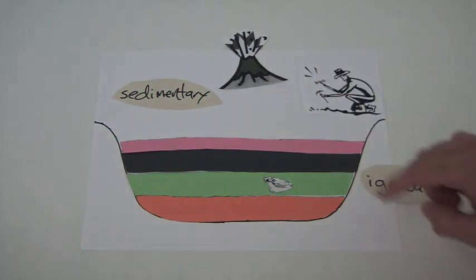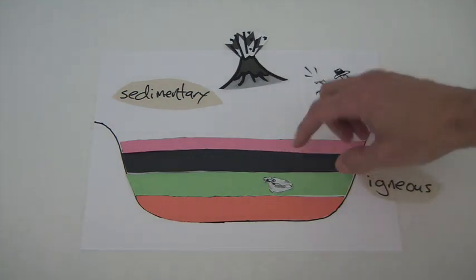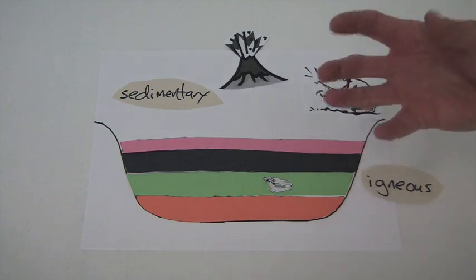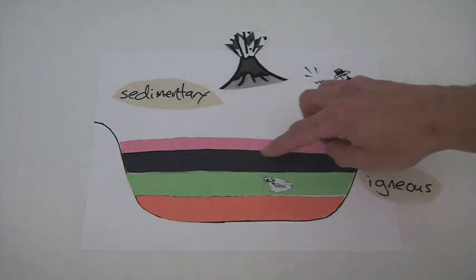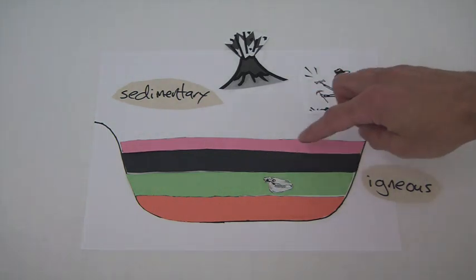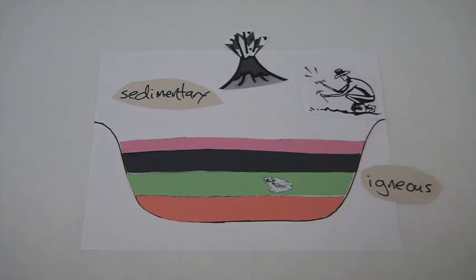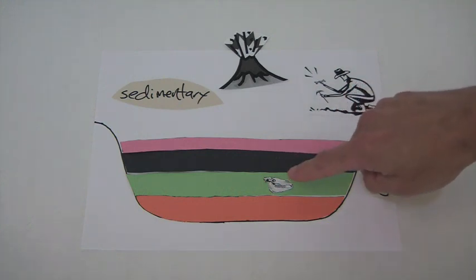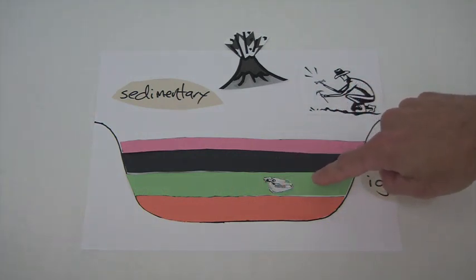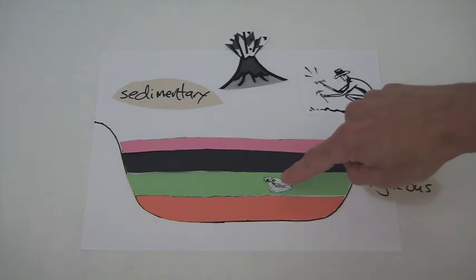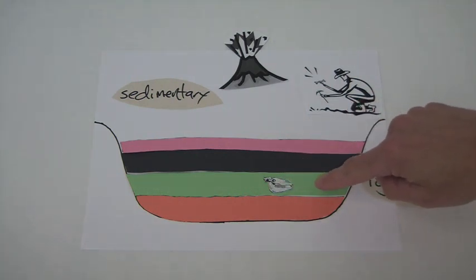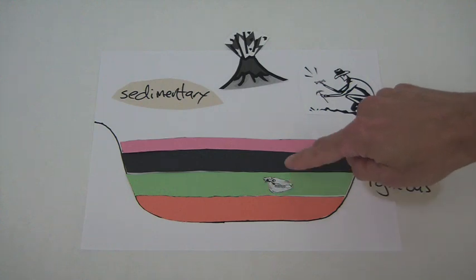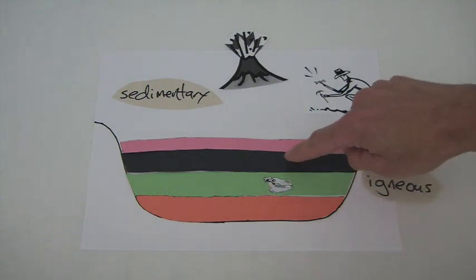When igneous rock layers cool down, they kind of reset — they have a certain amount of radioactive atoms of a certain element, and then those atoms decay over time. So if we get the absolute age of this rock layer, then we can say: since this sedimentary rock layer was deposited first and this fossil formed here, this fossil must be older than the age of this rock layer.